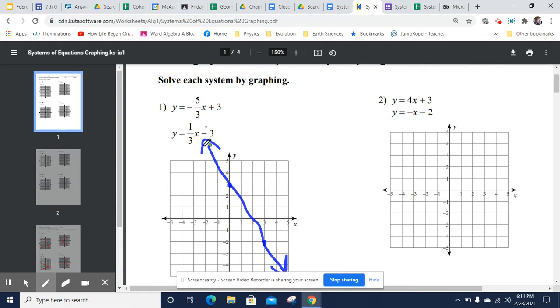So this one has a y-intercept of negative 3, so we plot negative 3. And then we can use our slope to plot another point. So that's a slope of 1 over 3. So up 1 over 3, and oh, how convenient that is. It ends up right on the other line. That's super convenient.